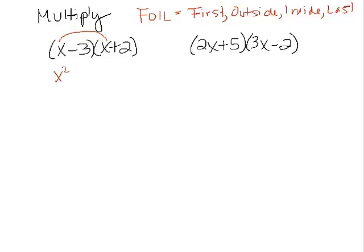x times x gets me x squared. x times 2 gets me 2x. Negative 3 times x gets me negative 3x. And negative 3 times 2 gets me negative 6. And we're just going to combine all those things together.